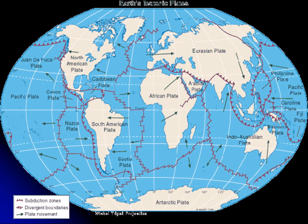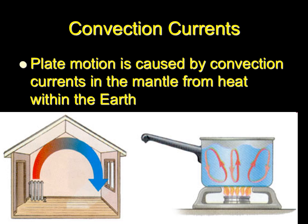Everywhere else, plates are moving together, and when plates move together there are often subduction zones. When one plate is heavier than the other, it sinks underneath the lighter one, and that's where mountains, mountain belts, and volcanoes are created. Sometimes when two continental plates come together, they push up into mountains.